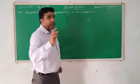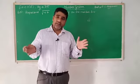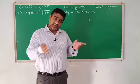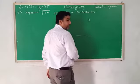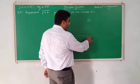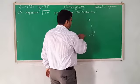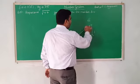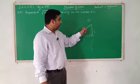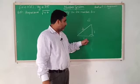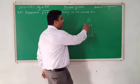If I make root 2, I take my scale — 1 unit base and 1 unit perpendicular. When I add these using Pythagoras theorem — hypotenuse squared equals perpendicular squared plus base squared — the hypotenuse will be root 2.